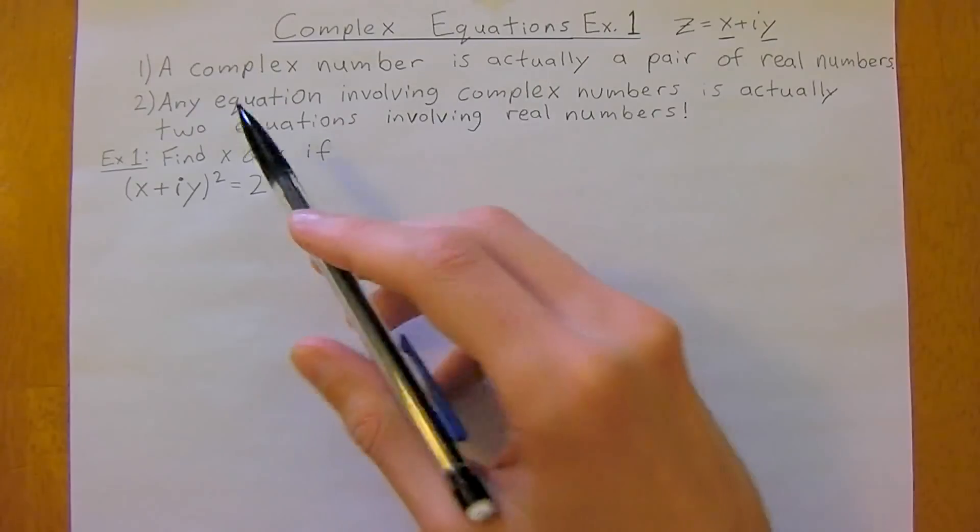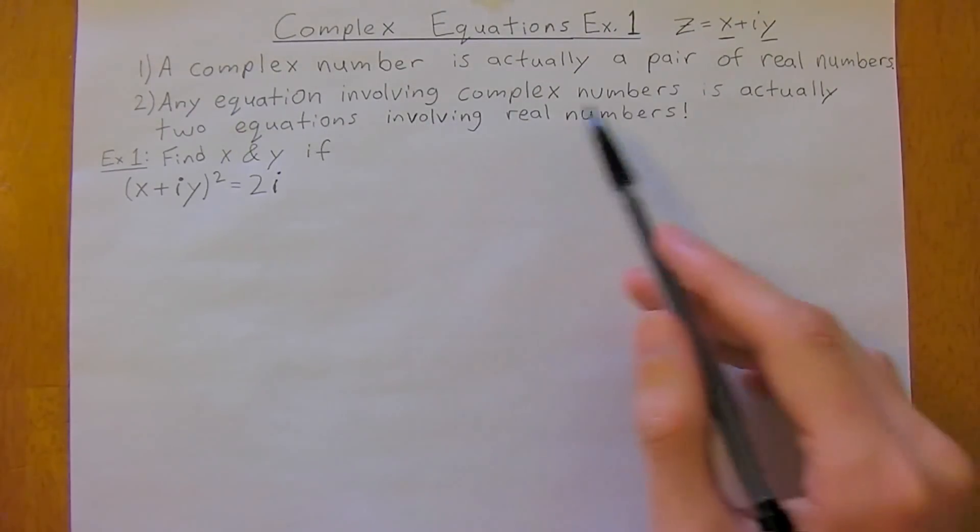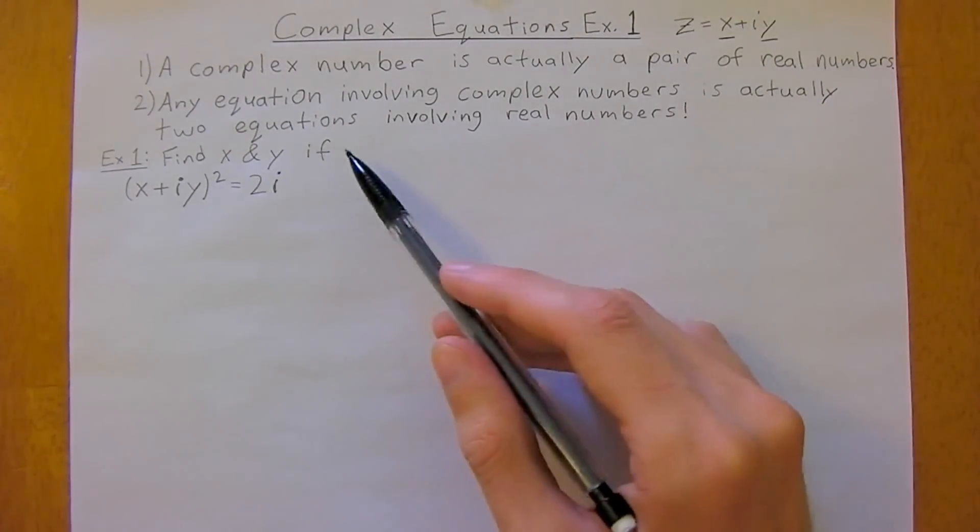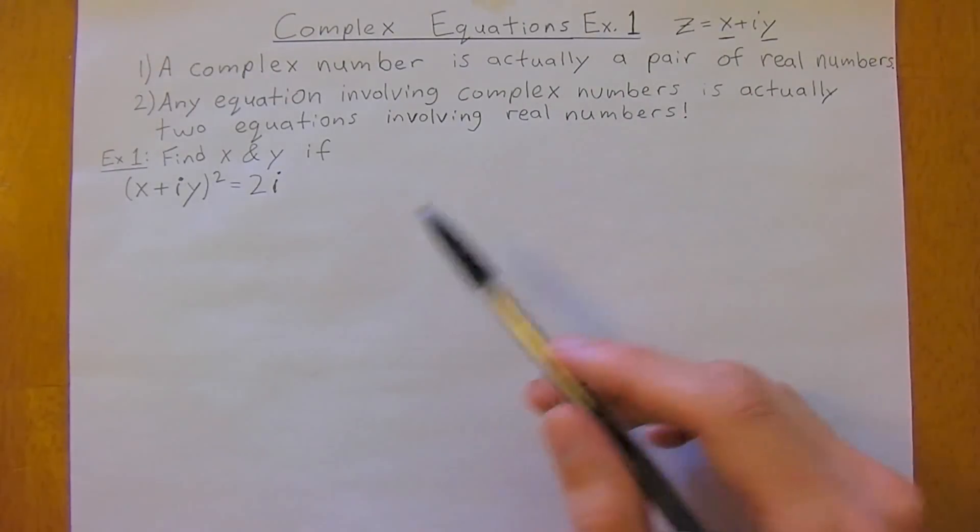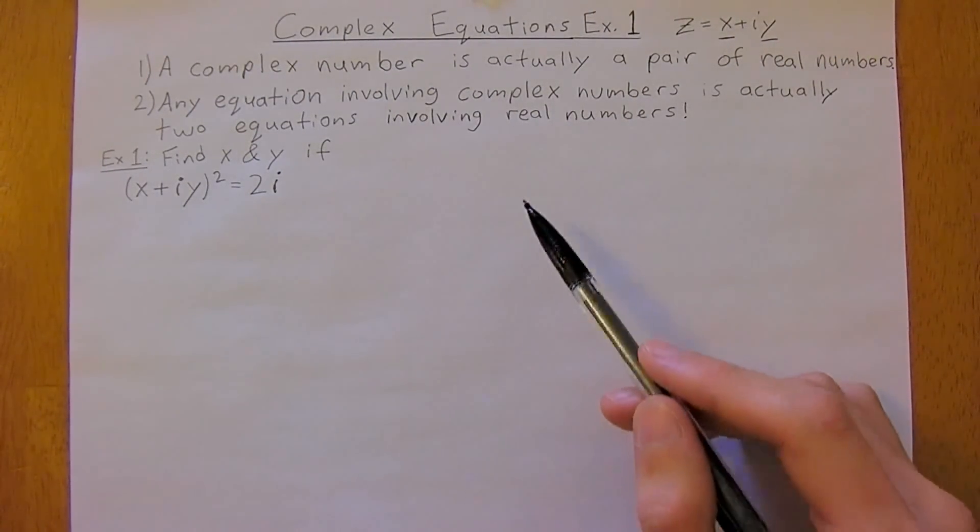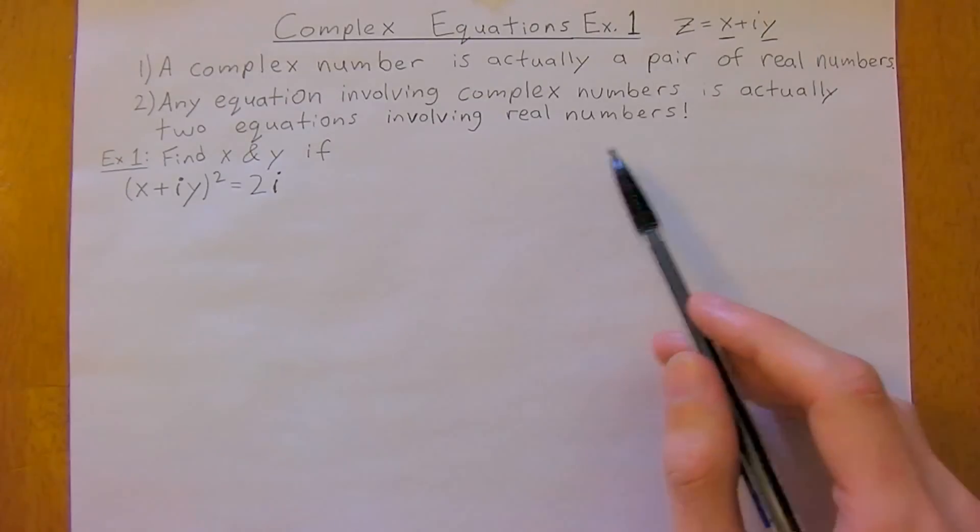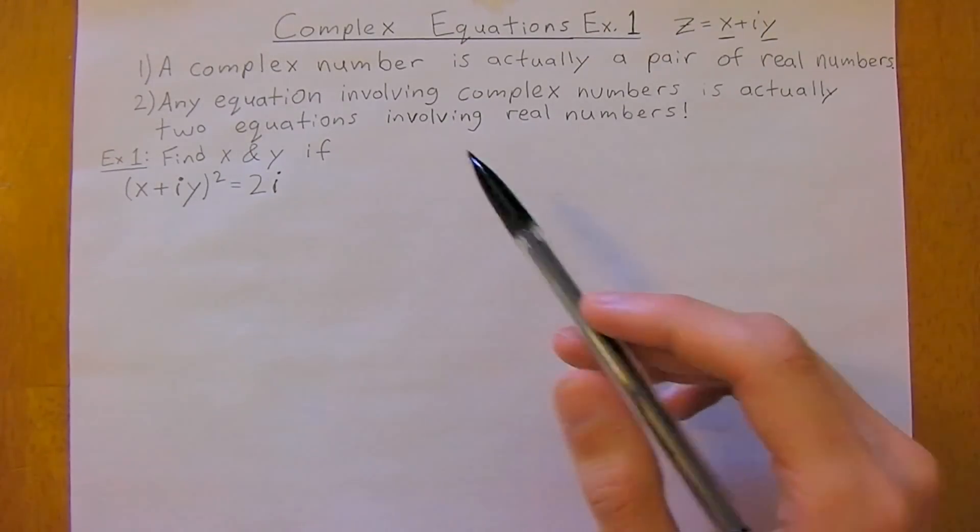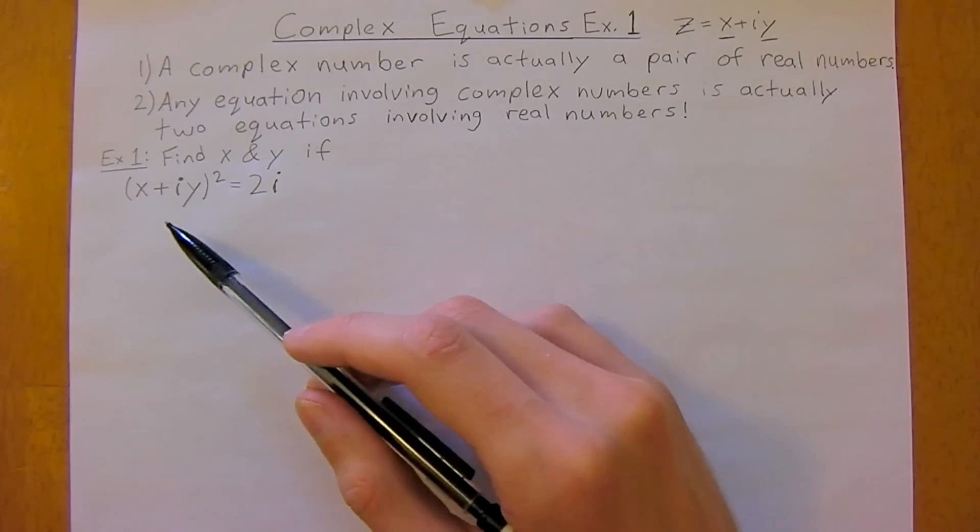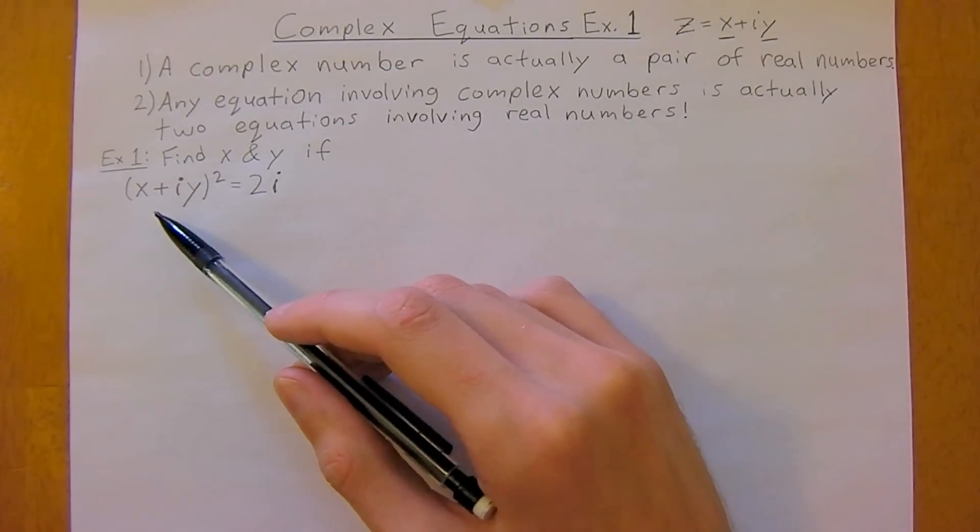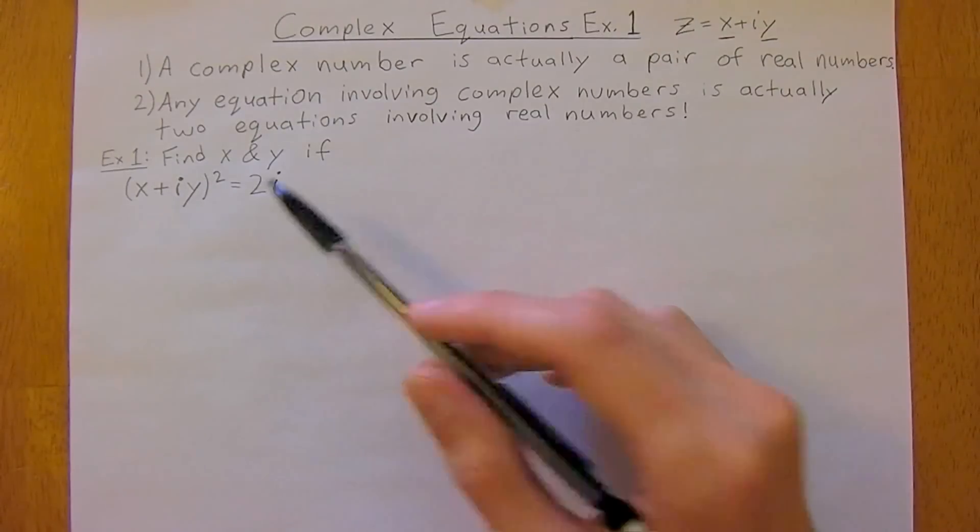The second thing is that any equation involving complex numbers is actually two equations involving real numbers. We're going to do a little example just to explain this second part a little better. You're asked to find x and y if x plus iy squared equals 2i.